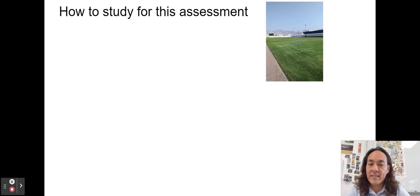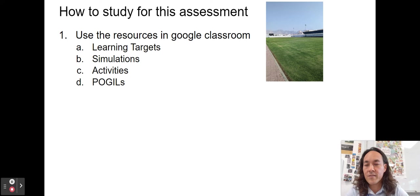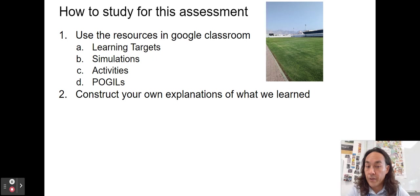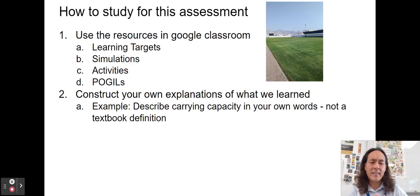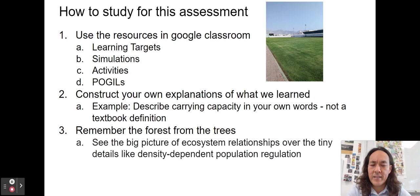As you're studying for this test, use the resources in Google Classroom: learning targets, simulations, activities, and the Poggle practice packets. Construct your own explanations — don't just give me the book definition of carrying capacity, give it to me in your own words. See the big picture of ecosystem relationships over tiny little details. Don't get hung up on whether something is an R or K species — think about the big picture of how ecology works.